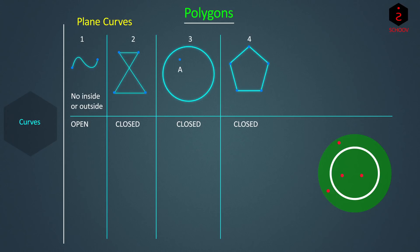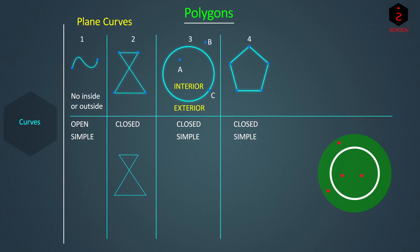So point A is inside closed curve three, point B is outside, and C is on the curve. The inside of a closed curve is called the interior and the outside is called the exterior. We can see that when we draw curve two the pencil crosses an already drawn part; however in curves one, three, and four it does not happen. So these are called simple curves. But three and four are also closed, so three and four are simple closed curves. A simple curve can be open or closed.